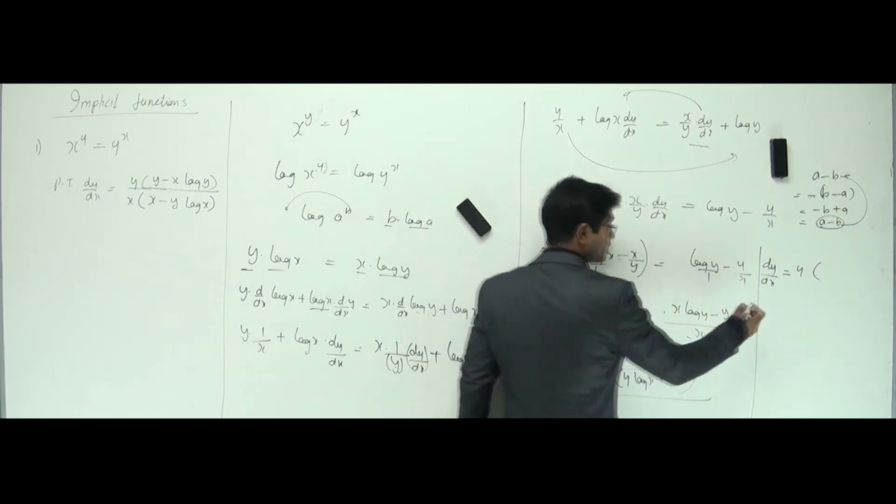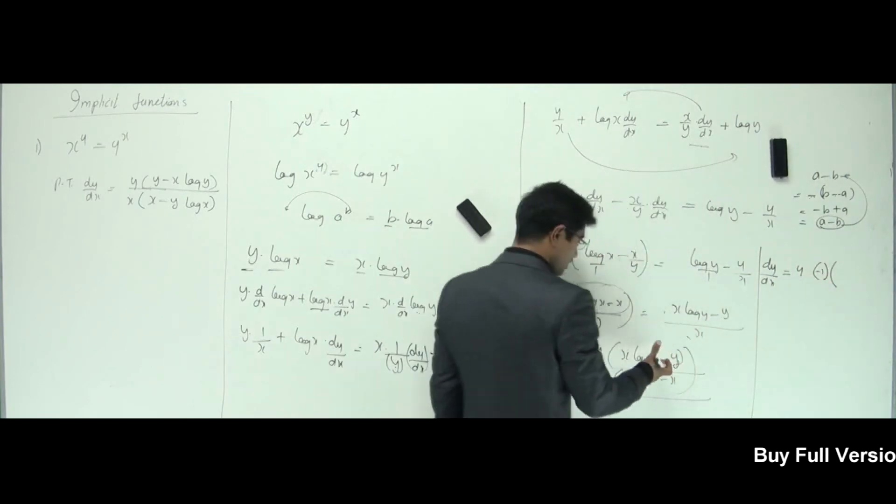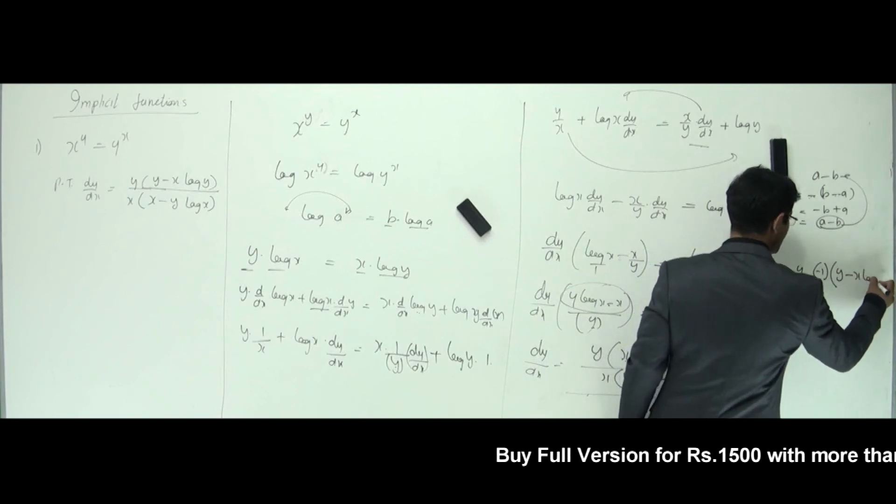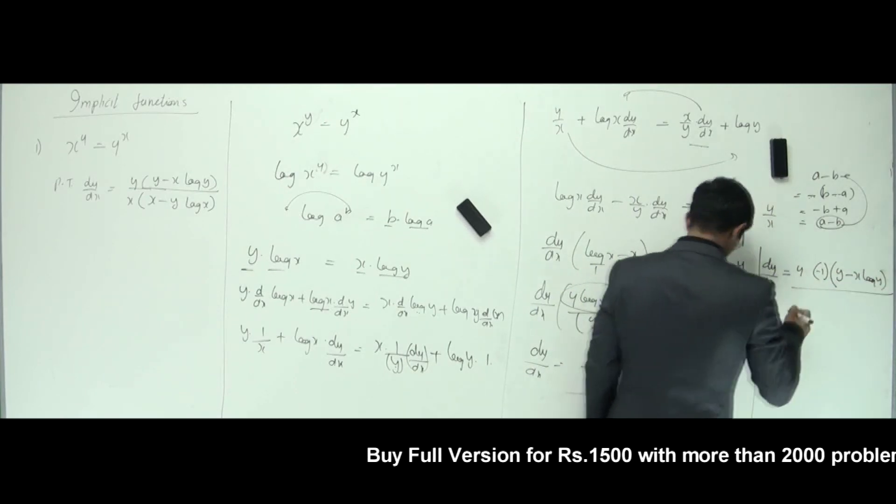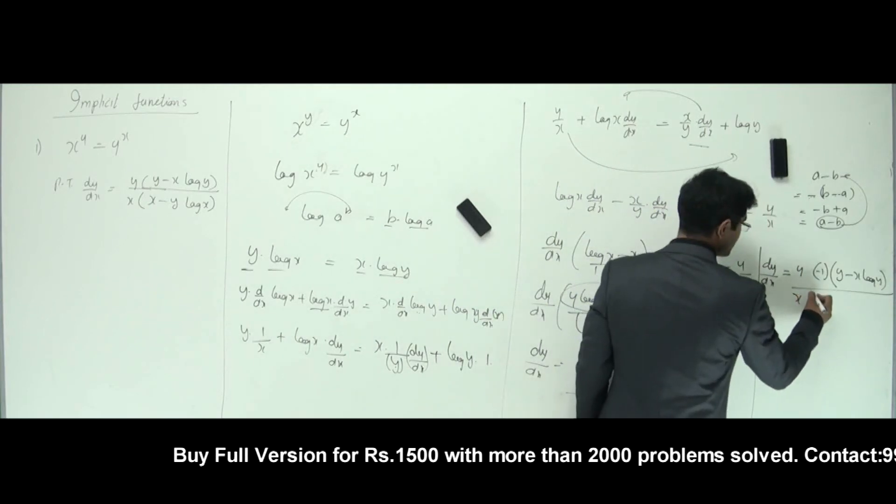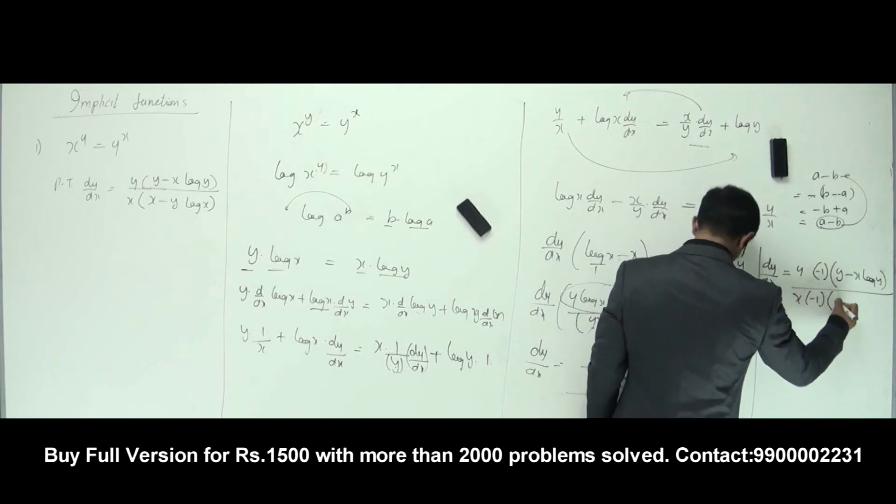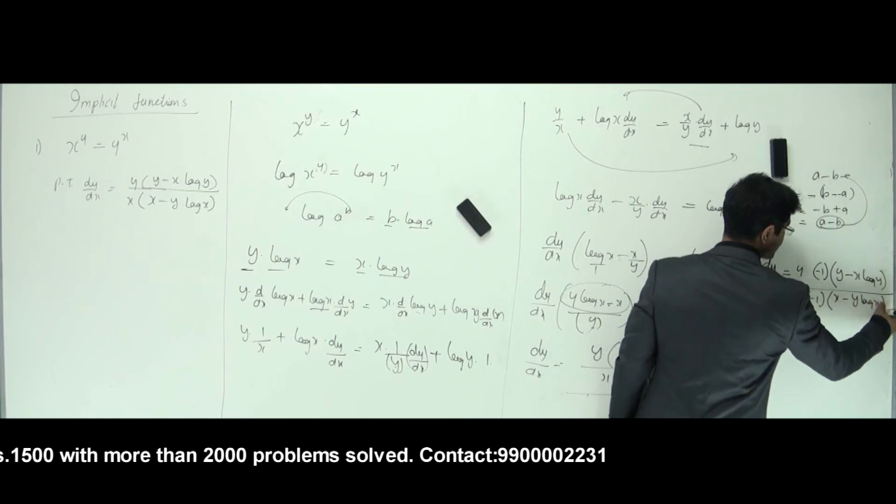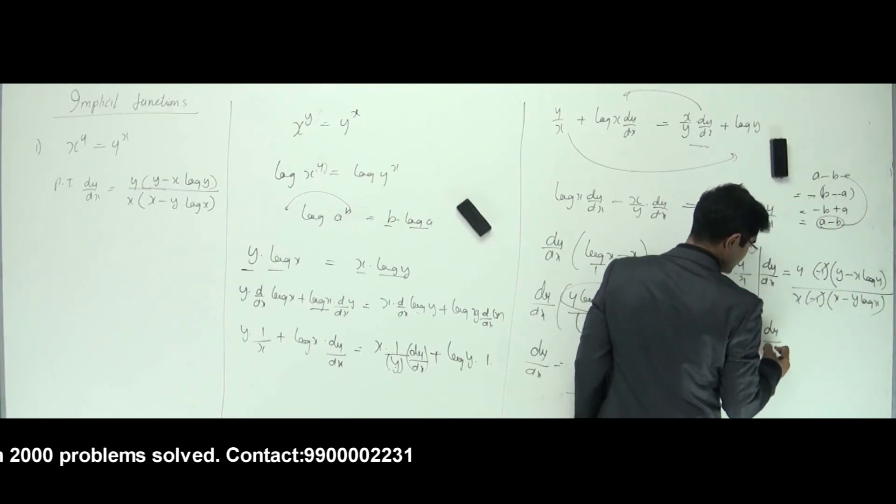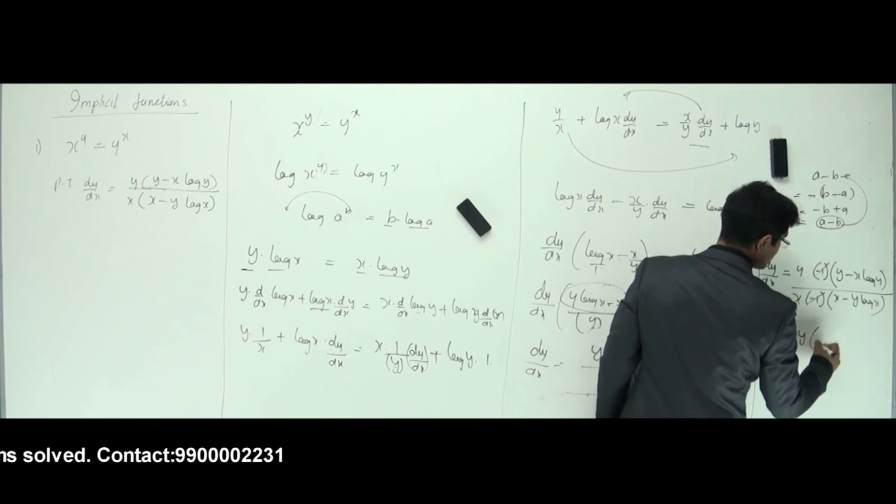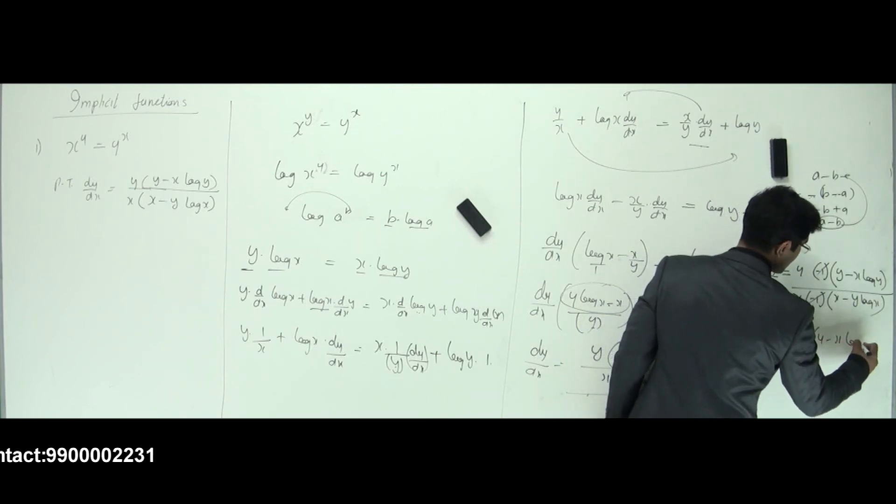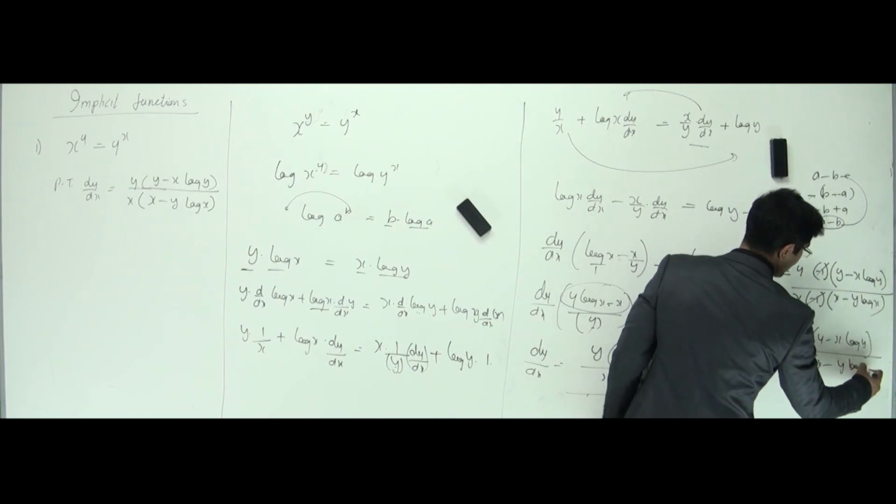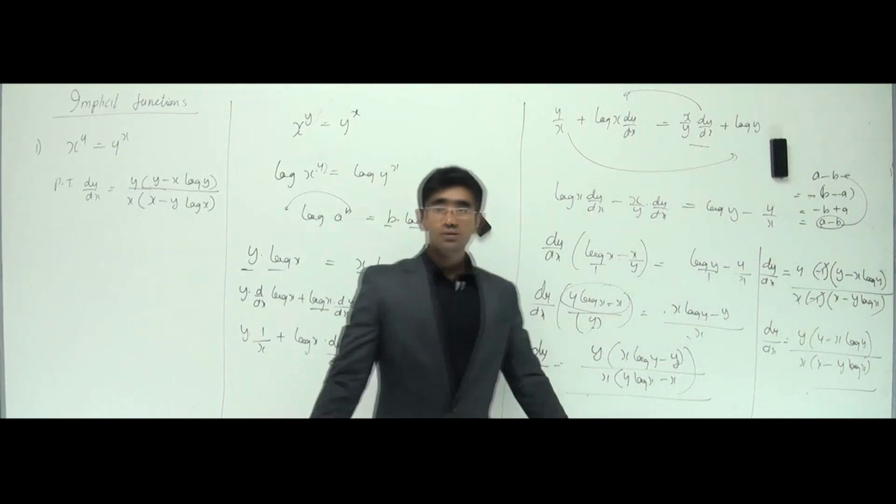So I can do the same thing here. I'll just take minus sign outside, minus one, and the whole thing looks like y minus x log y. Very nice. What about this guy? Again, change this guy also. x is out here. Minus one I'm taking out. That becomes x minus y log x. Yes. Now, minus one minus is gone. Is this looking like my answer? Yes. That is y into y minus x log y, the whole thing divided by x into x minus y log x. And that's it. How simple is that?